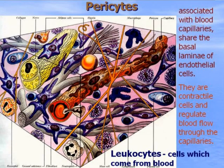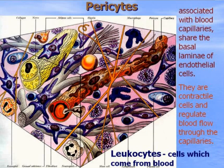Pericytes are located in the wall of blood capillaries. They can contract and stop blood flow in a capillary, then relax and allow blood flow to start again. So they can regulate the blood flow in blood capillaries. In this picture, also visible are leukocytes immigrating from blood to carry out their function in loose connective tissue. This is the moment when leukocytes go through the wall of a blood capillary. Here are also collagen and elastic fibers, as well as plasma cells, macrophages, basophils, and fat cells.